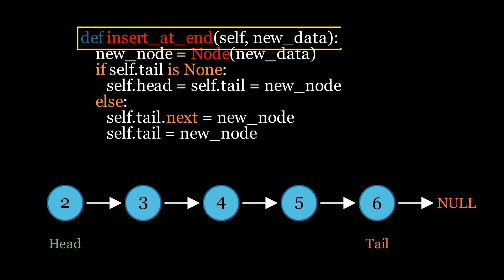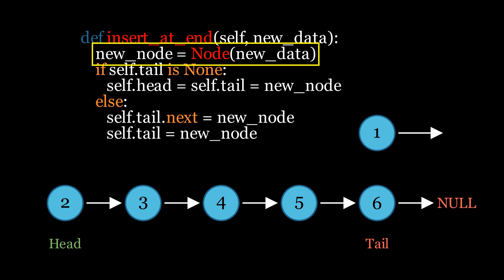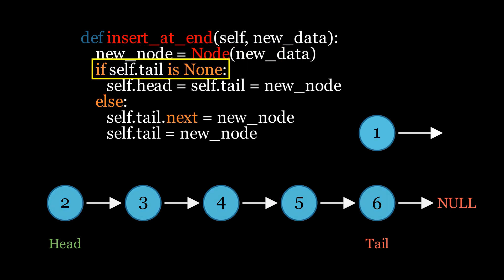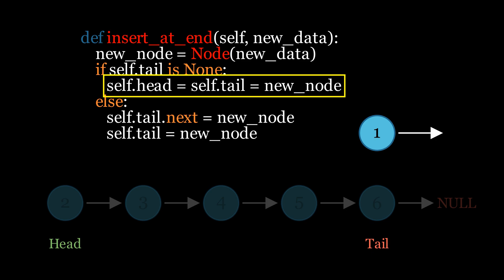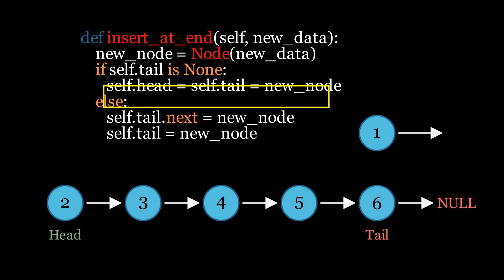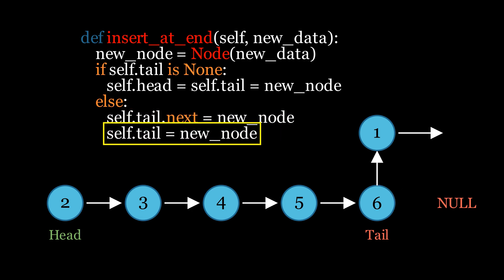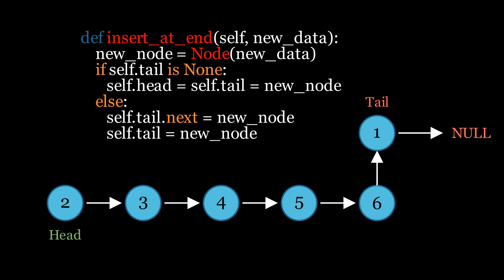Inserting at the end is also similar. It starts with defining the function with the new data as the input parameter, then creates a new node with this data. The algorithm checks if the list is empty; if so, it assigns both head and tail to this new node. If the list is not empty, it sets the next pointer of the current tail node to the new node and then updates the tail to the new node. Both inserting at the beginning and at the end are constant time operations because they involve only a few pointer changes.